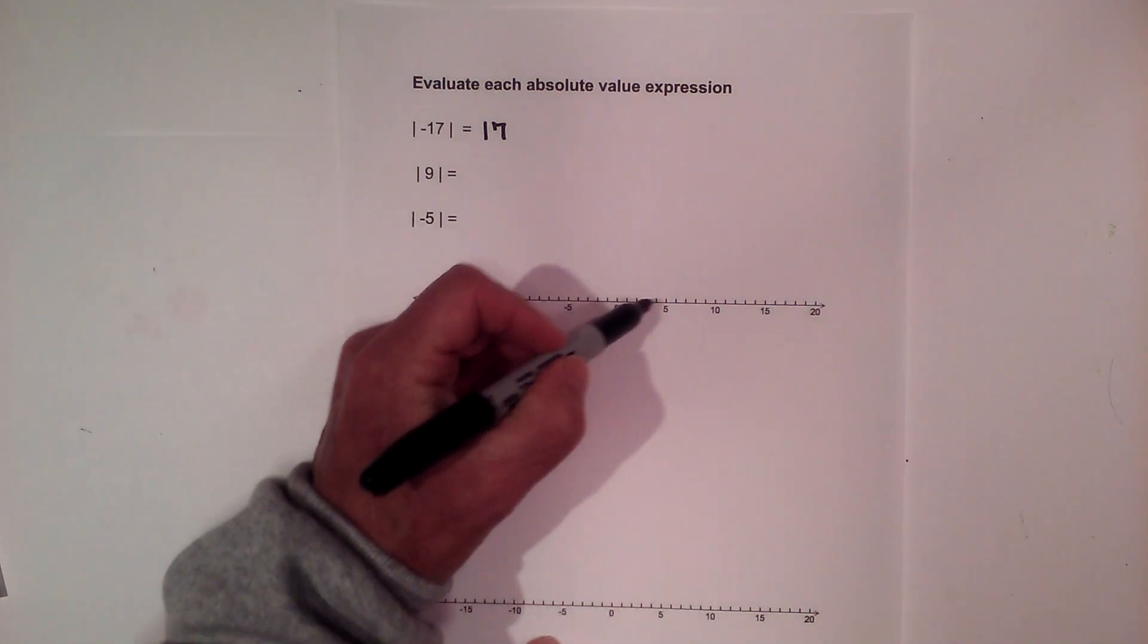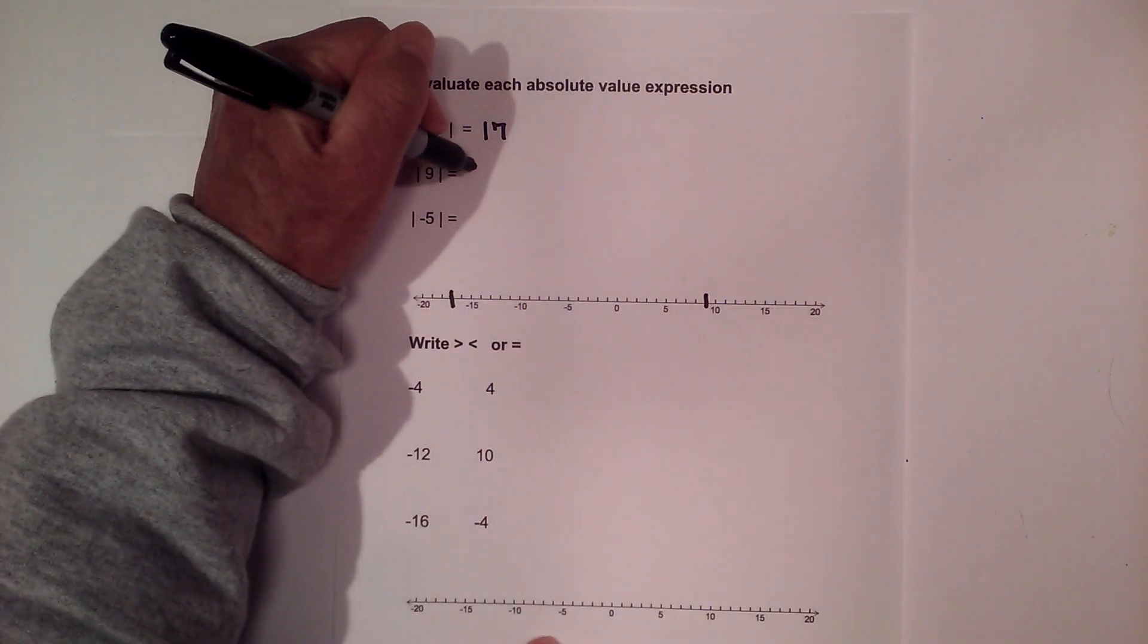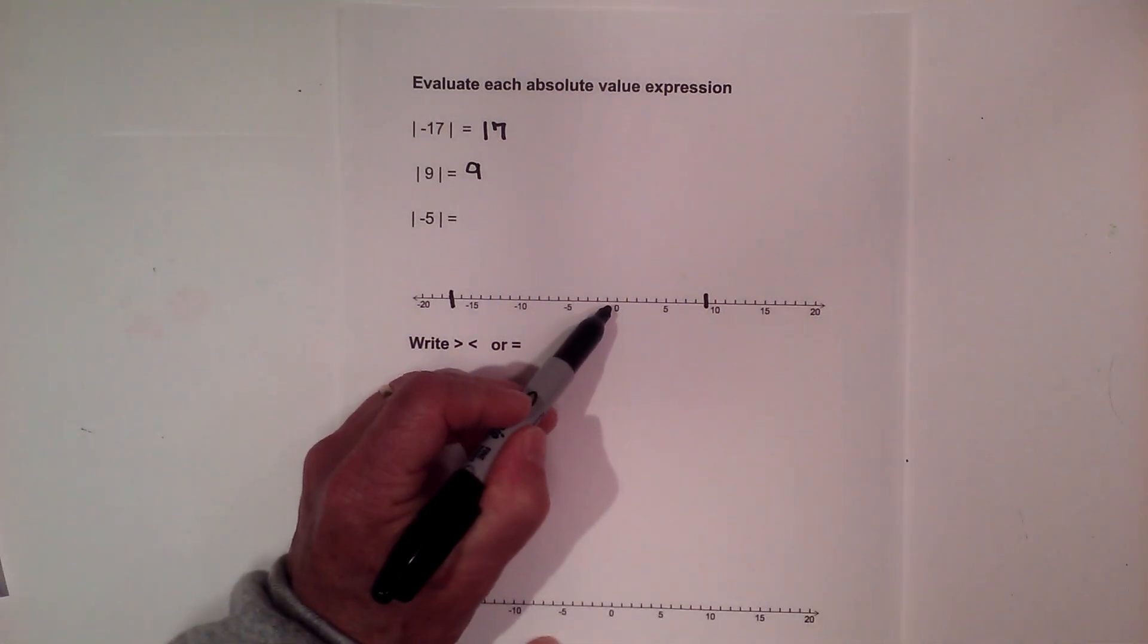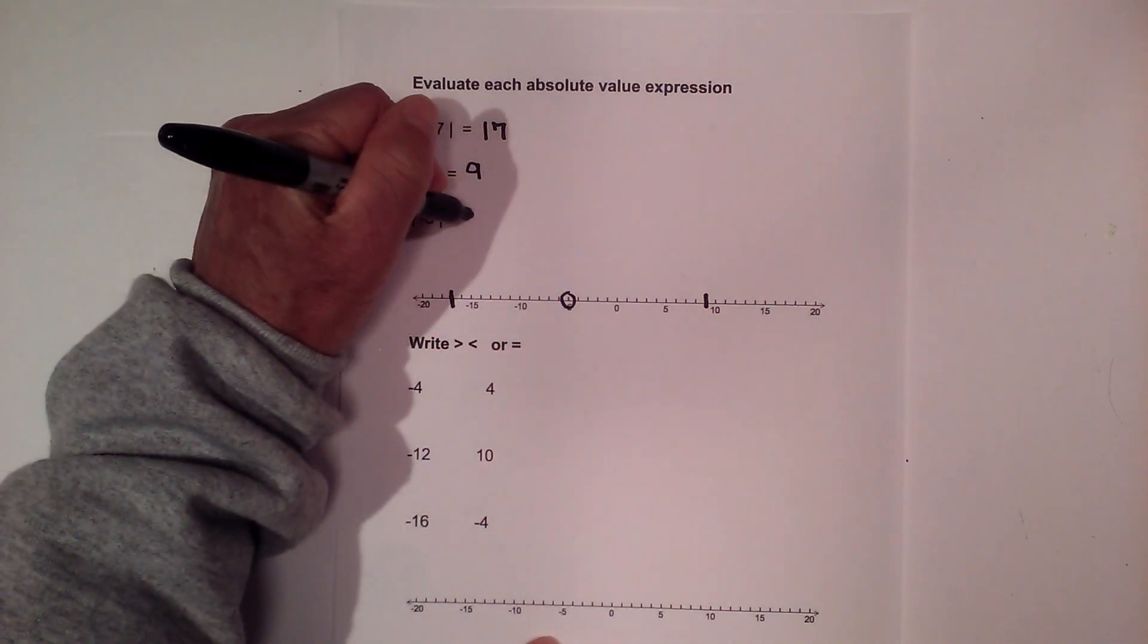9, absolute value of 9, it is right here. And it is 9 units from zero, so it's 9. And negative 5 is 1, 2, 3, 4, 5 units from zero, so that would be 5.